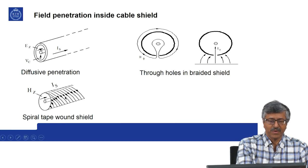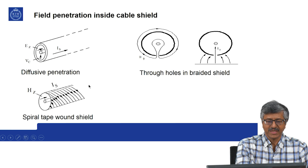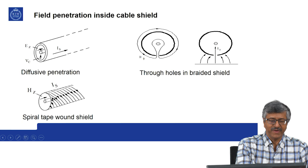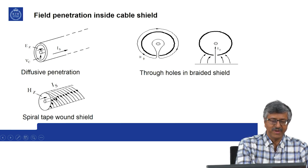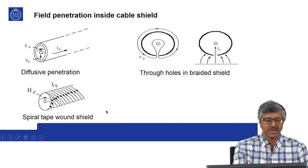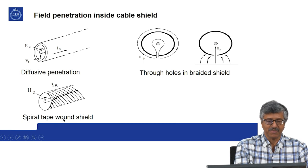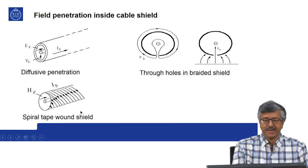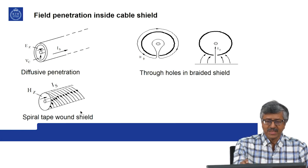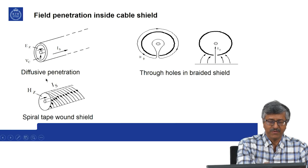Sometimes the shield is in the form of tape that is spiralling around it. The currents on it will follow a spiralling track, and this will create an unbalanced magnetic field inside. This unbalanced magnetic field can create a current in the inner conductor. This is a special case for spiral wound, tape wound shield. In all three types — whether solid, braided, or spiral wound — you will have diffusive penetration.